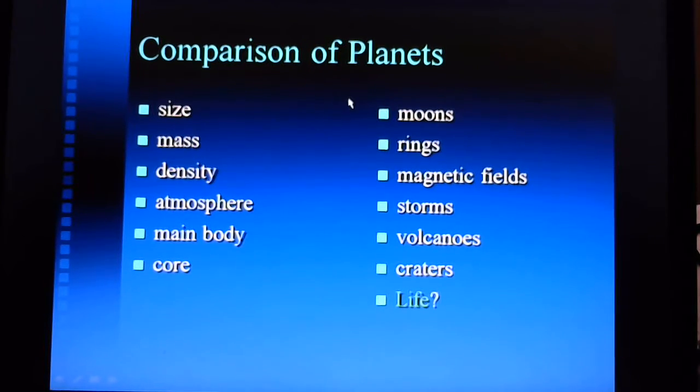When it comes to moons, the inner planets didn't have that many moons compared to the outer planets. Of the four inner planets, Earth had one and Mars had two. But when you get to the outer planets, every planet has more than a dozen.